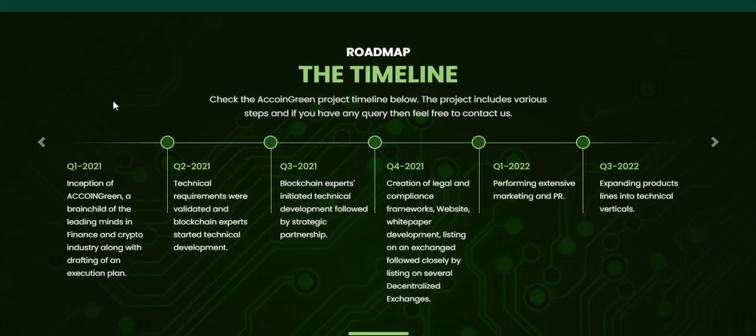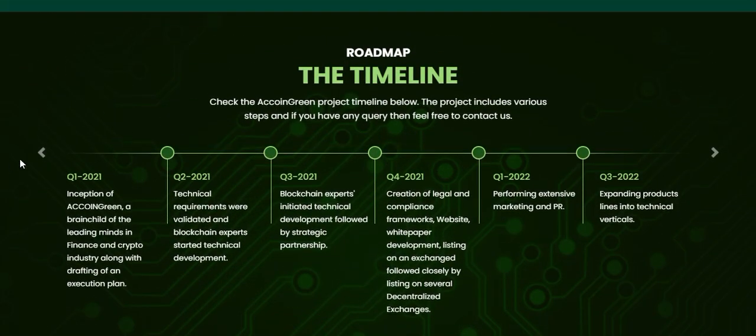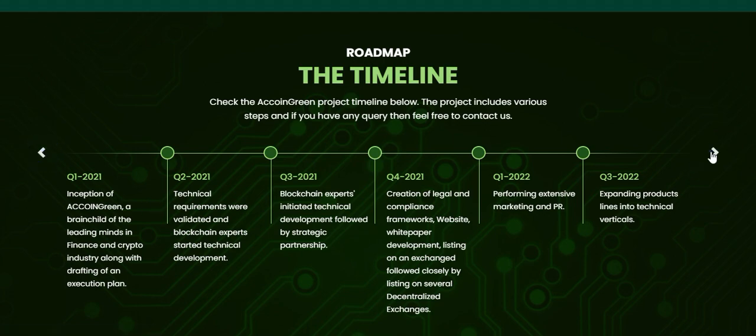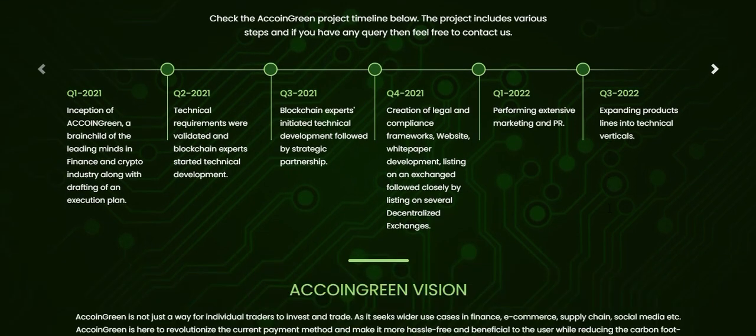Here is the roadmap — the roadmap is the main thing of any project. You can see Q1, Q2, Q3, Q4, and 2022 is starting here as well.